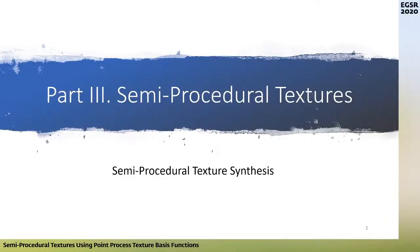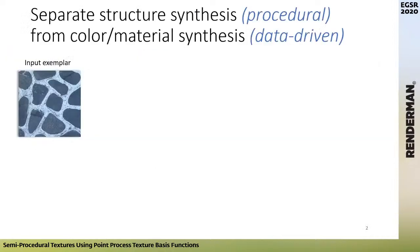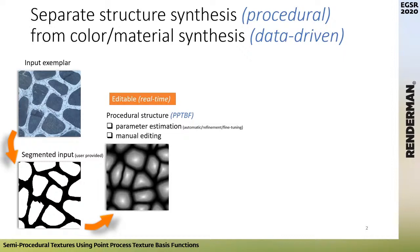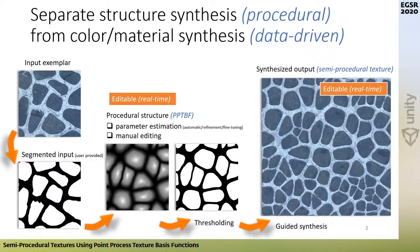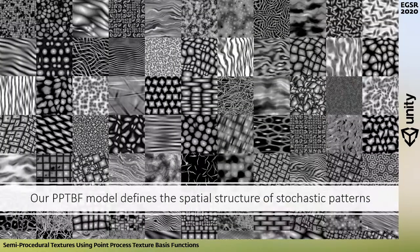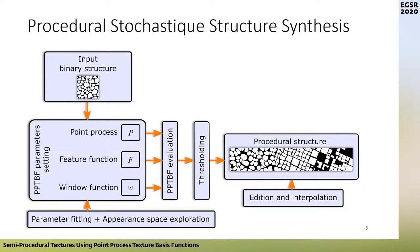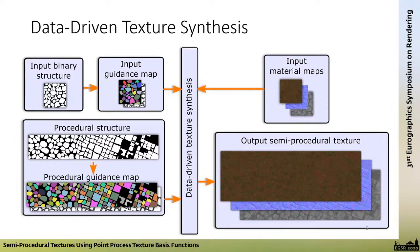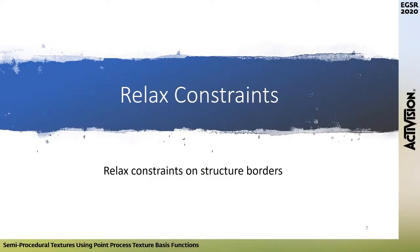Here is the last part of the talk about our model of semi-procedural textures. Recall: we have an input exemplar, the user provides a segmented input, we find the closest PPTBF that looks like the exemplar and threshold it. This guides synthesis based on an extension of parallel control texture synthesis — appearance-based synthesis, texture-by-numbers, and proxy-guided approaches. We synthesize guidance maps on-the-fly directly from the input — distance maps and label maps — and also generate new distance and label maps for the output, applicable to both color textures and materials.